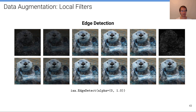Another filter combines the original image with an edge-detected version of it, making the image look very different. In some of these cases we may have left the interval of reasonable values — for instance, on the top right image it's actually quite hard to recognize the sea otter.